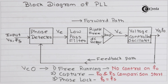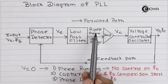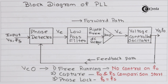In the case of PLL, the low pass filter is basically used to remove the high frequency noise present at the output of the phase detector. That means the output of the phase detector VE is passed through the low pass filter. Here we will get a ripple-free DC voltage at the output of the low pass filter, because the high frequency noise is attenuated by the low pass filter.